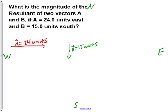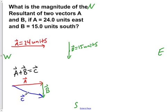If we now add these two using the tail-to-tip method, so A plus B equals vector C, we would have vector A which is 24 units plus vector B which is 15 units to the south, which would result in a vector C as shown down here.